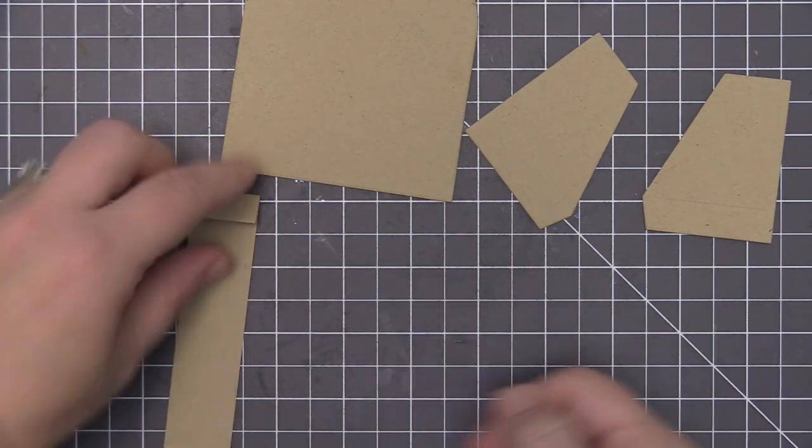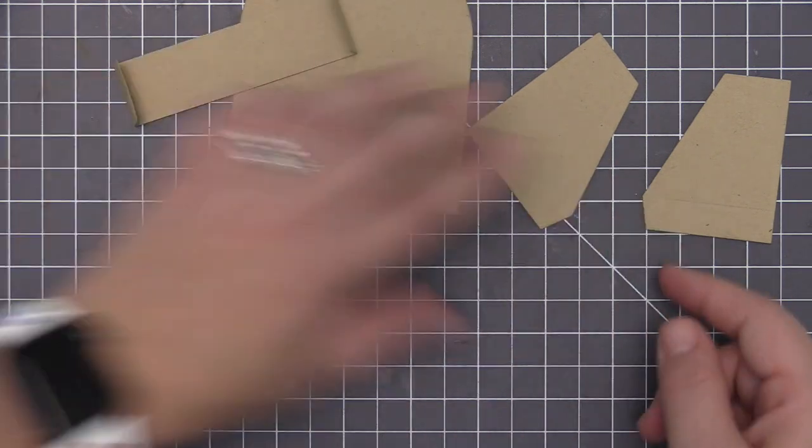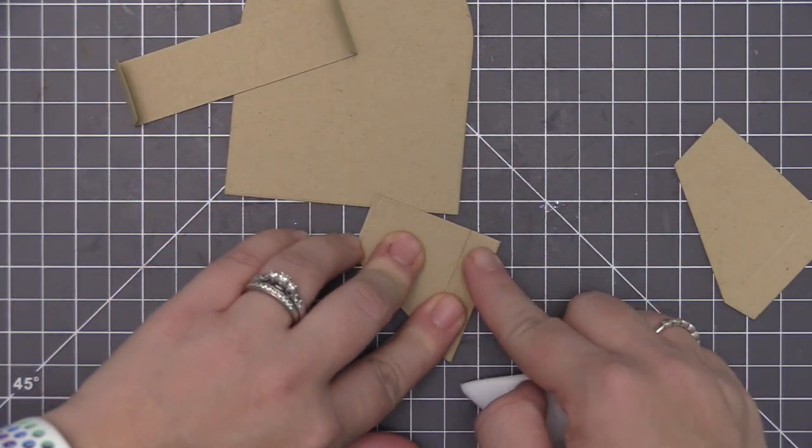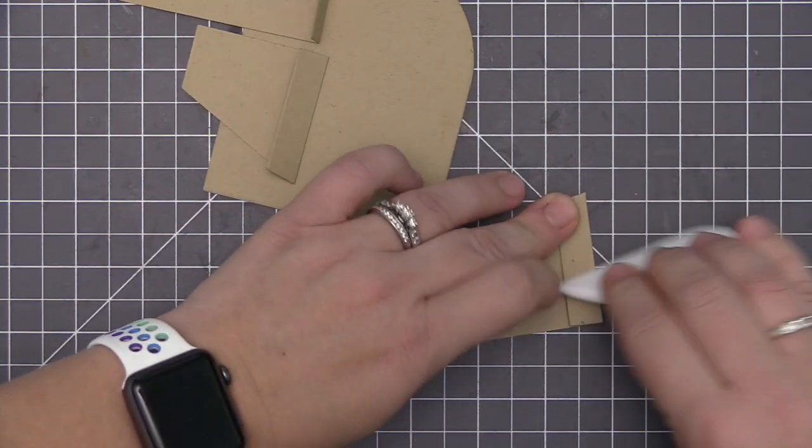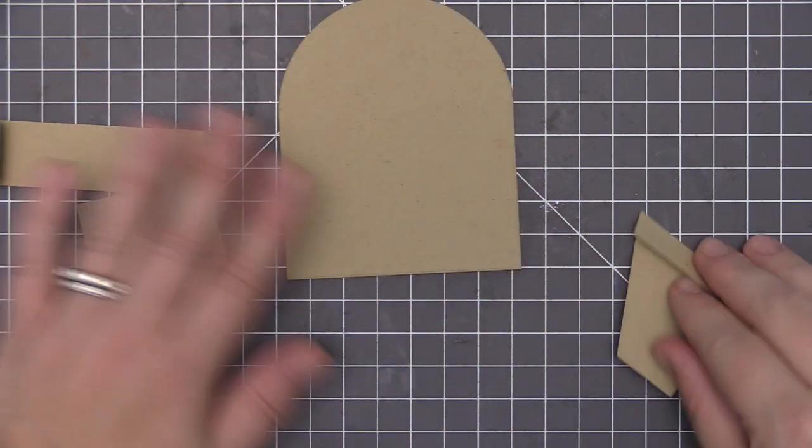You're going to take your scoring tool and fold along the score lines. These are already included on the die cut piece when you die cut it. You're just going to go ahead and fold over all of those little tab pieces and use your bone folder to really press down and make sure that you have really nice solid crease lines on those folds.